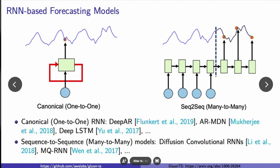Let's get to the RNN-based forecasting models. We can break them up into two categories. We have the canonical, which is one-to-one, with one node going to one hidden unit versus sequence-to-sequence, which you can think of as many-to-many. We have many nodes going to many hidden units. We're going to highlight DeepAR as a canonical example and MQRNN as a sequence-to-sequence example.